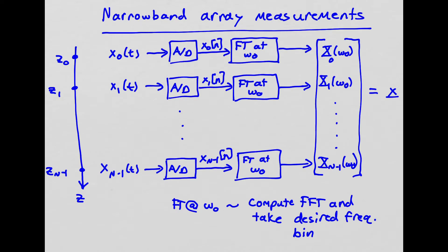For our scenario, we're considering a uniform line array oriented along the z-axis. The 0th sensor is at z0, the n-1 sensor is at z n-1, and each sensor detects a continuous time signal. So x0 of t is the continuous time signal for the 0th sensor. We run that through an A to D converter. That gets us a signal x0 of n that's sampled in time.